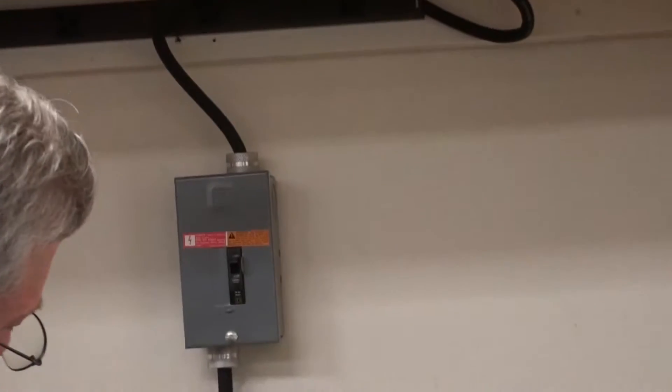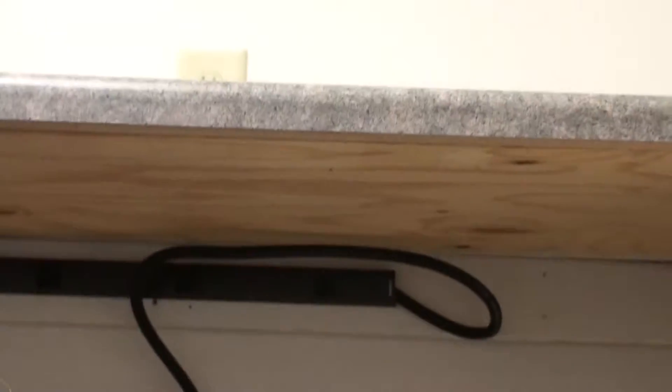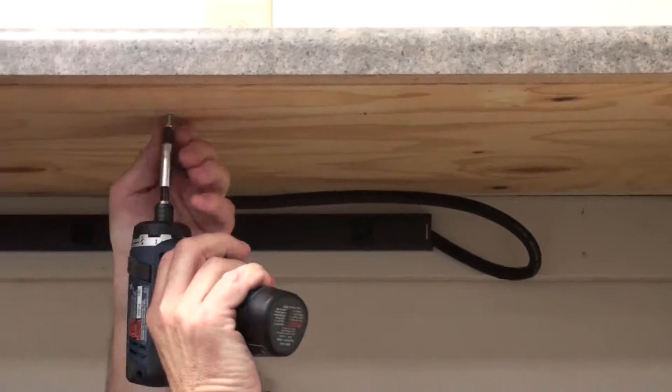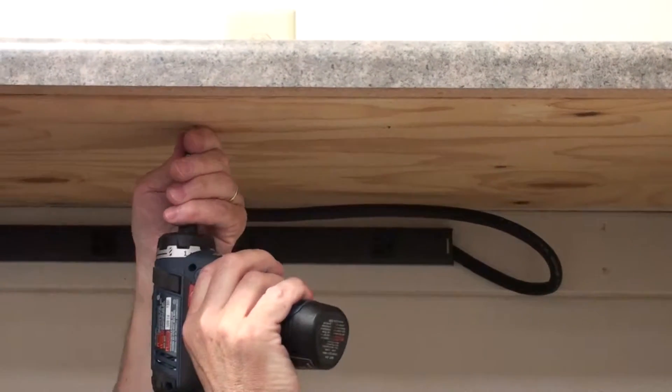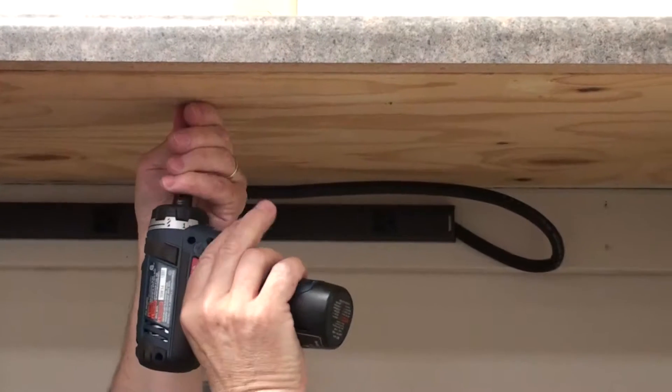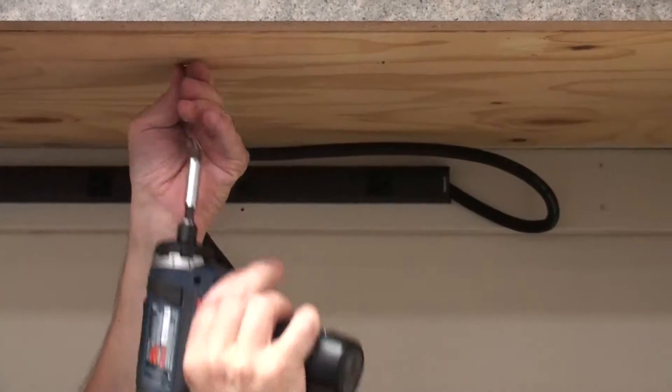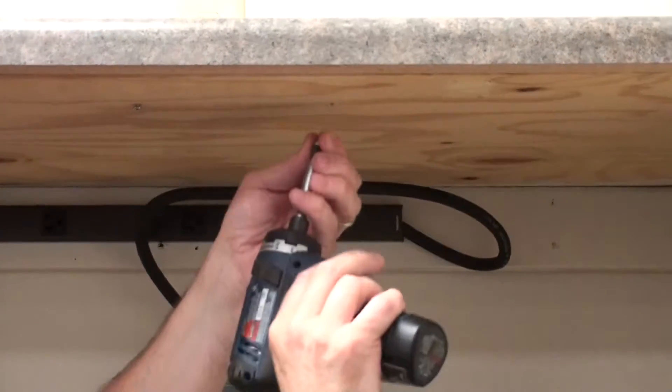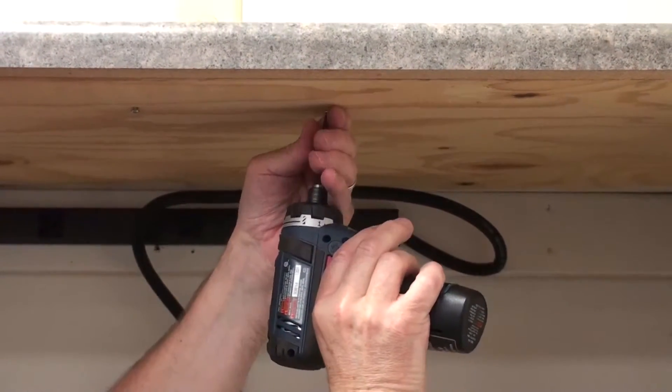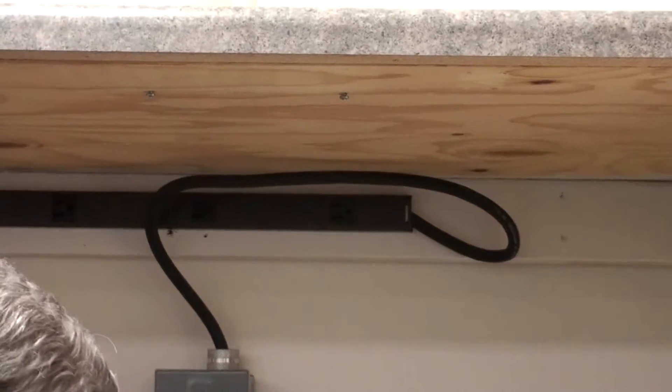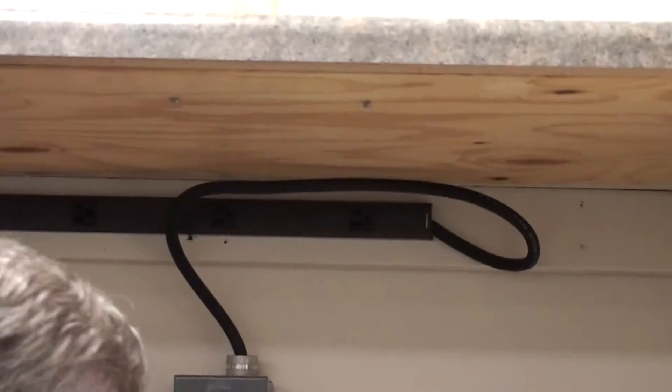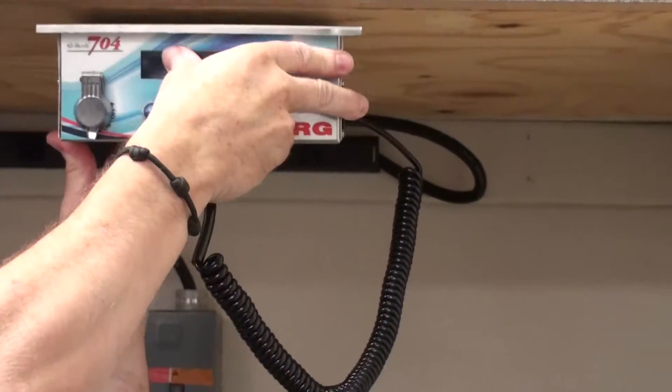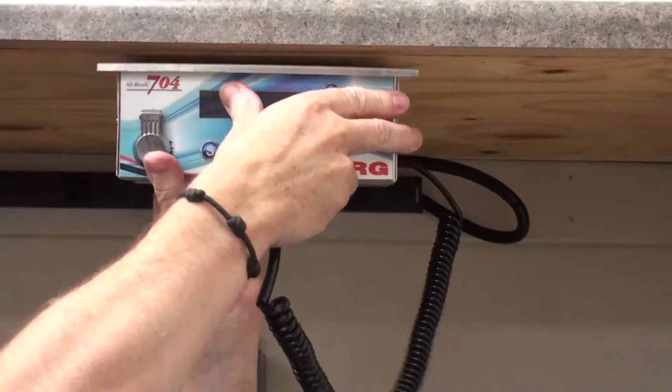With those locations marked, take our drill and we'll insert a couple of screws. Again, don't insert them all the way. Leave them out a little bit so that those tabs can easily slide over. There's the screws, the tabs, and they slide right over.